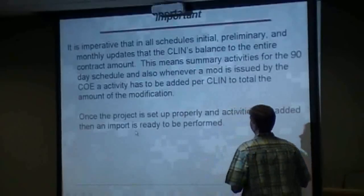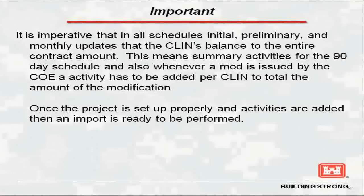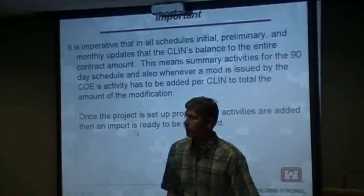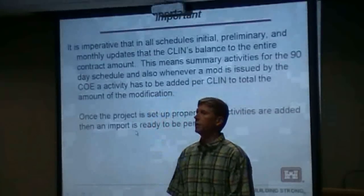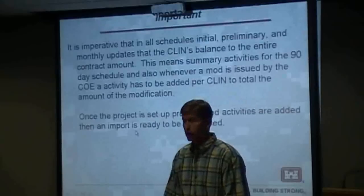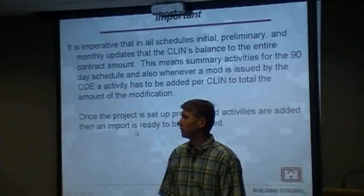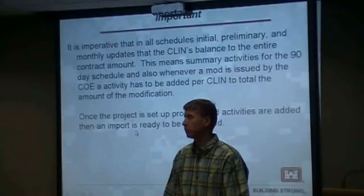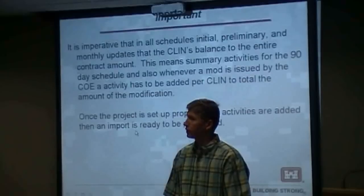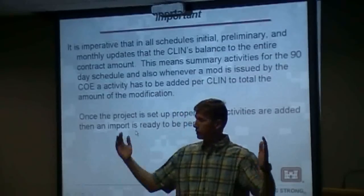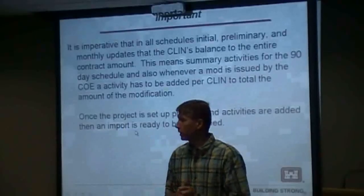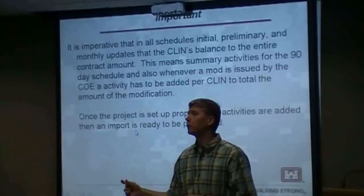It is imperative on every single schedule you ever give us — the preliminary, the initial, the monthly updates — that the plans are balanced. On your preliminary schedule, the scheduling spec says you shall turn in a schedule within 15 days of notice to proceed. We expect the first 90 days to be detailed enough that we can make payment to you. We want you to get your money as fast as possible. We want the first 90 days to be detailed, and then for the remainder of the job it's recommended — not mandatory — that you summarize the remainder by responsibility code.